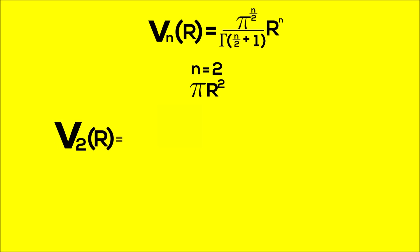We plug in 2 for n and get pi to the 2 over 2, or pi to the first. r just has n as the exponent, which is 2 in this case. And that's all over gamma of 2 over 2 plus 1, which equals 2.